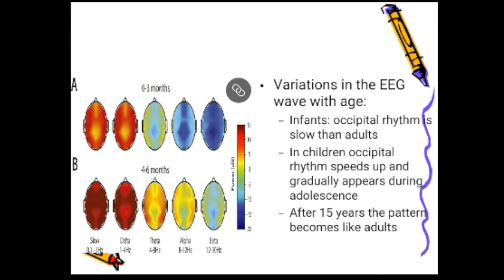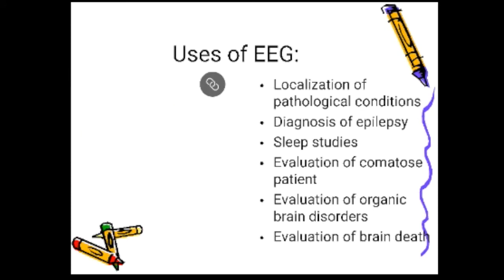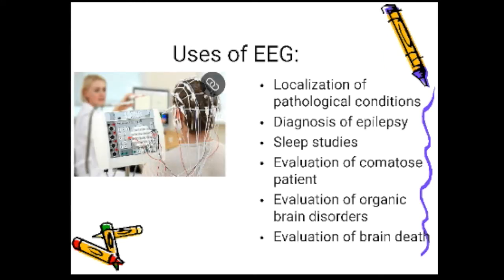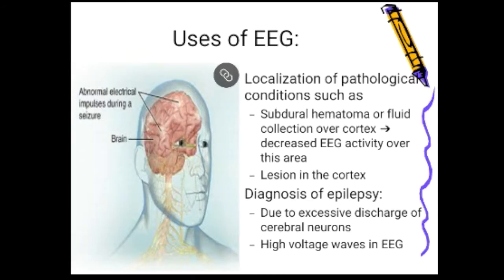Regarding age variations: in infants the occipital rhythm is slower than in adults, but it speeds up and reaches the adult pattern by age 15. Uses of EEG include: localization of pathological conditions, diagnosis of epilepsies, sleep studies, evaluation of comatose patients, evaluation of organic brain disorders, and evaluation of brain death. For localization, if fluid is collected over the cortex such as in subdural hematoma, EEG activity above that area is reduced, and local slow or irregular waves are formed.